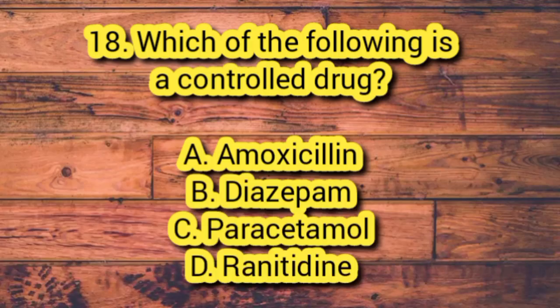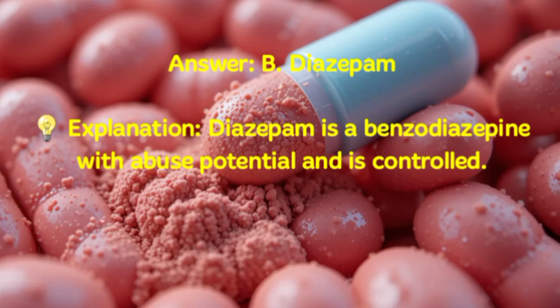Number 18. Which of the following is a controlled drug? A. Amoxicillin. B. Diazepam. C. Paracetamol. D. Ranitidine. Answer: B. Diazepam. Explanation: Diazepam is a benzodiazepine with abuse potential and is controlled.